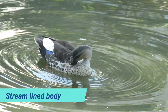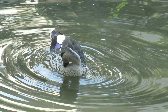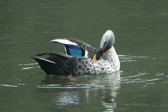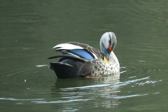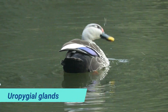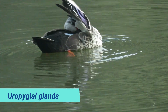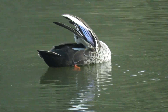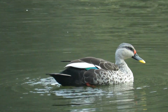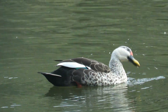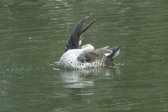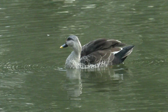Ducks have a streamlined body shape which reduces drag in water and enables them to move swiftly. Another very important feature is the oil glands, or uropygial glands, located near the base of the tail. These glands produce oil that ducks spread over their feathers, maintaining feather waterproofing and flexibility.